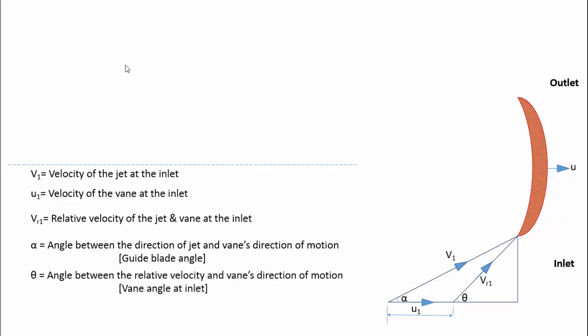The horizontal component of V1 will make the blade swirl or move. Hence the horizontal component is named as swirl velocity at the inlet, Vw1. The vertical component of V1 will just flow over the blade. Hence the vertical component is named as flow velocity at the inlet, Vf1.